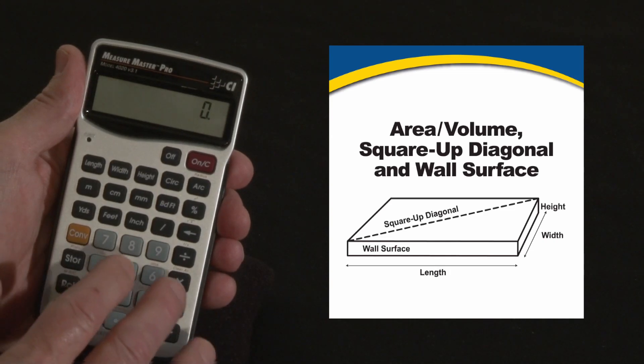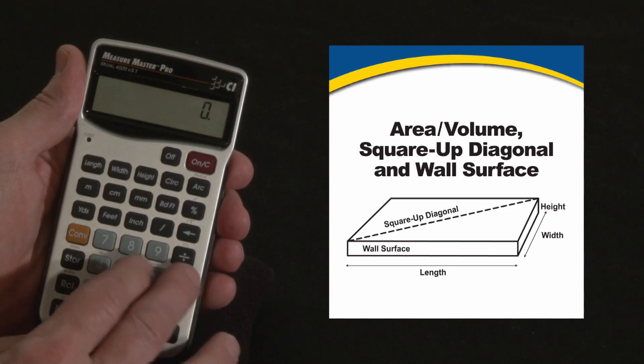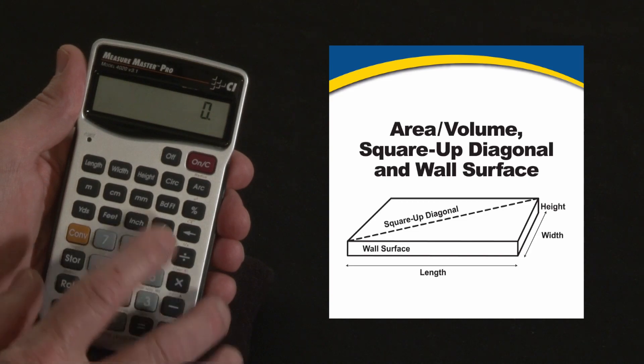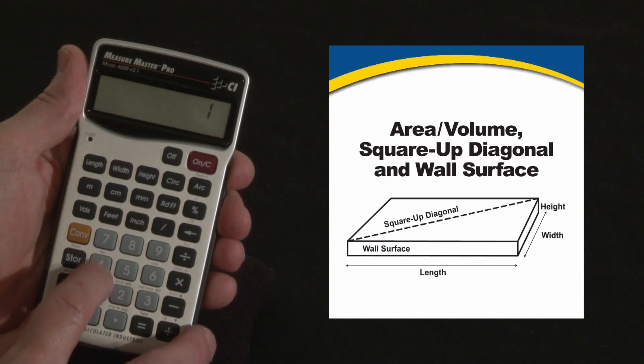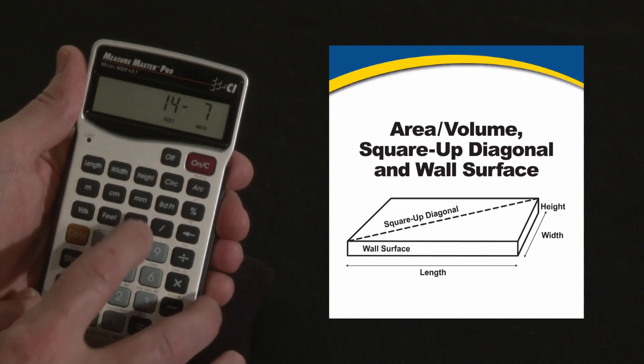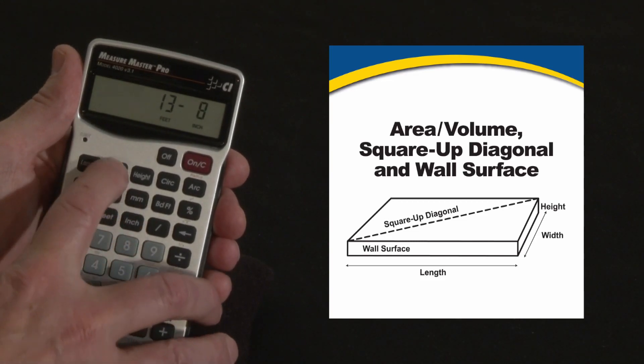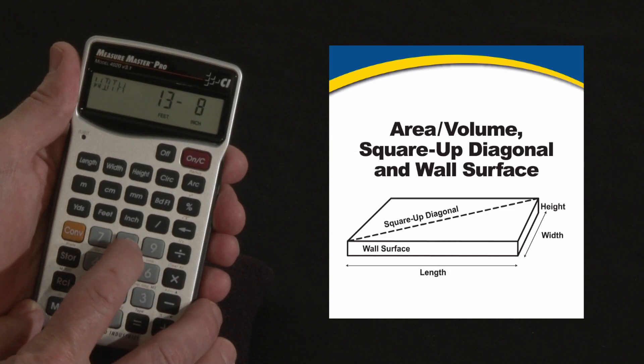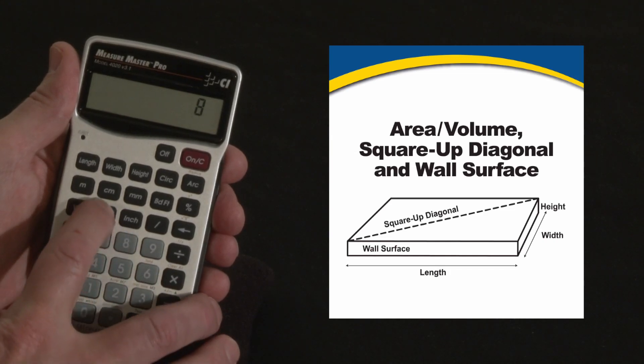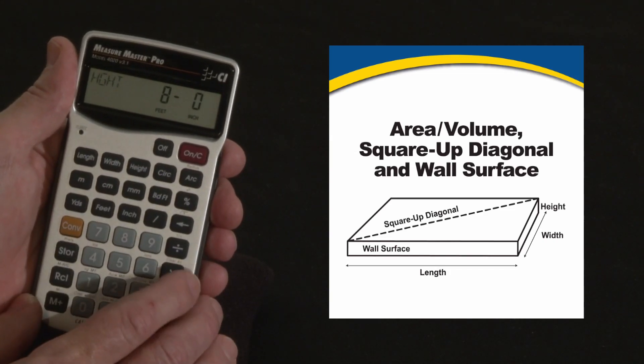You can always calculate areas and volumes mathematically, length times width, using the mathematical keys, but in this case we're going to use a shortcut key. 14 feet 7 inches, let's call that the length of our room, and 13 feet 8 inches can be the width of our room, and say we're going to have 8 foot high walls, so 8 feet is the height of our walls.